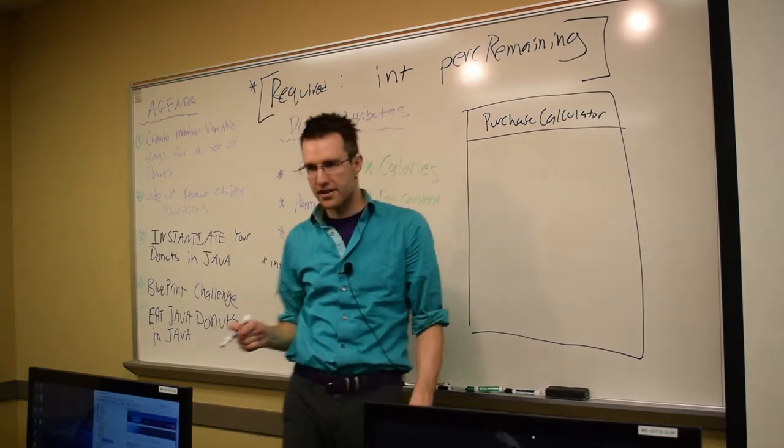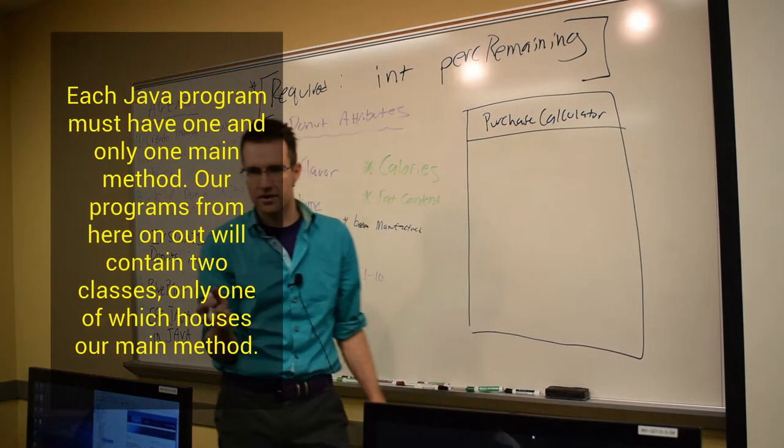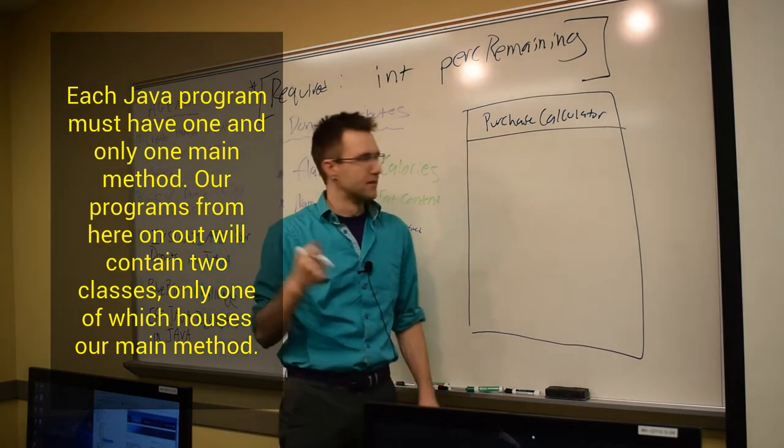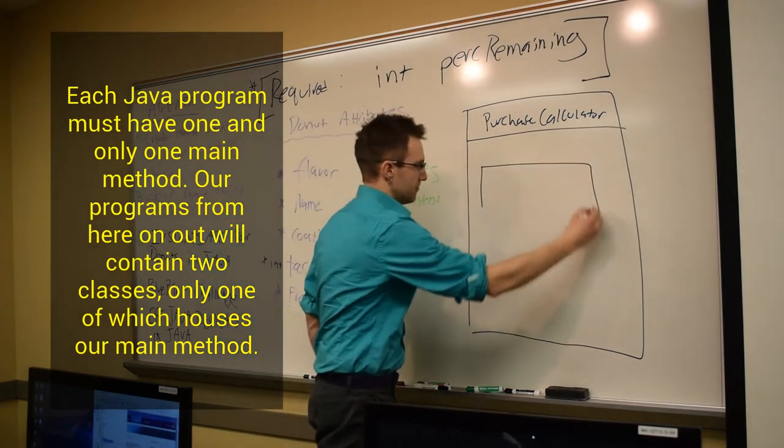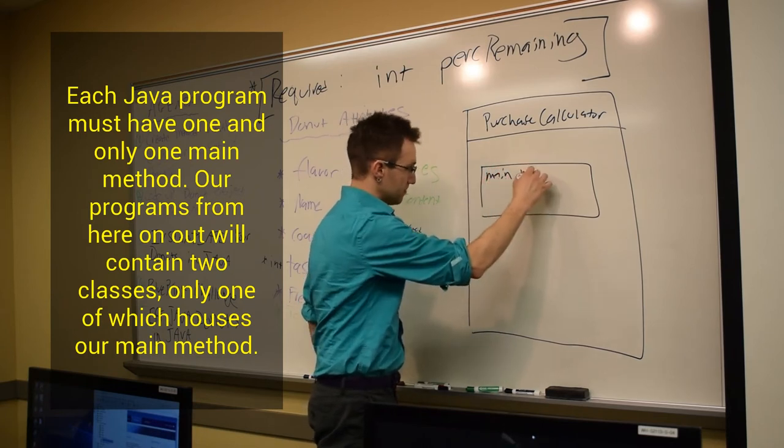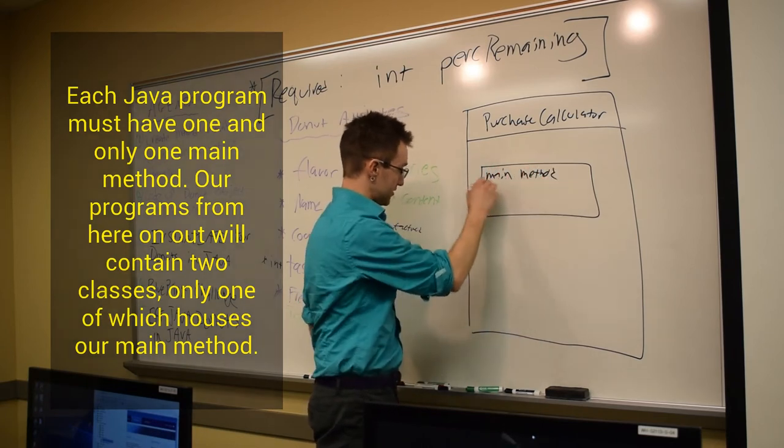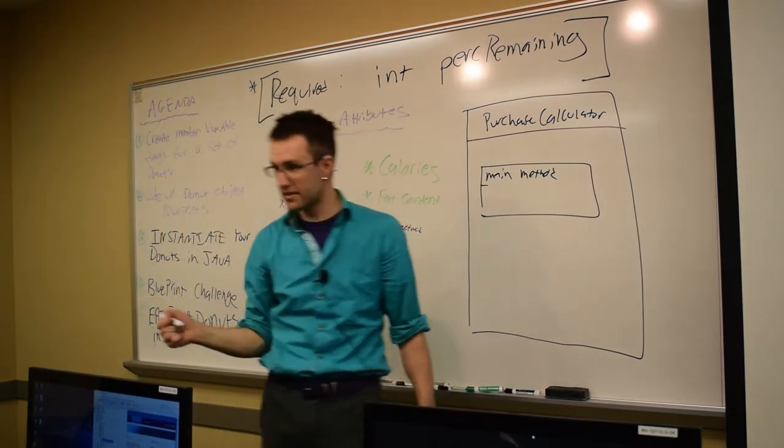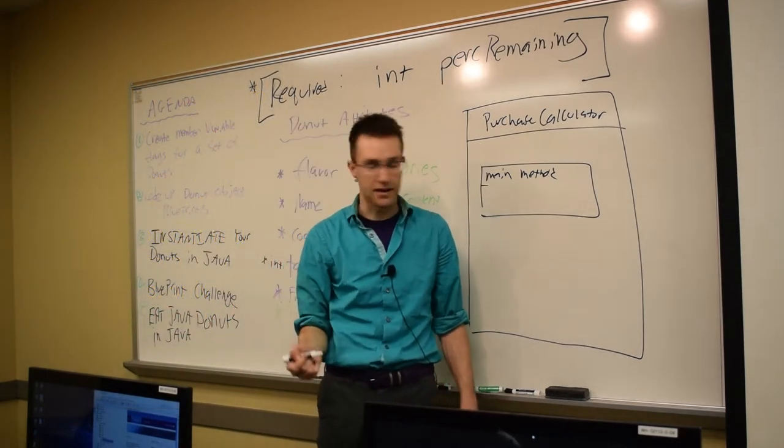And in this class, how did we get this program to run? We had a what method? We had a main method, and the main method is like the front door to our program, because the compiler starts at the first line of main, executes to the end of main, and then it stops. That's how the program is defined.